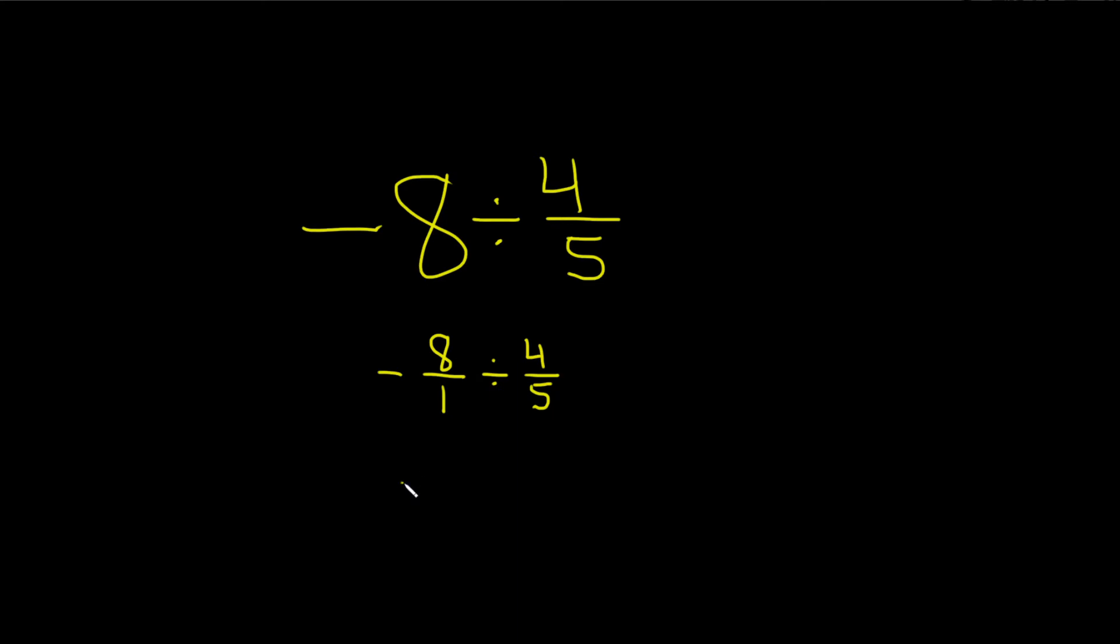So this is really negative 8 over 1 times, and then you just flip these numbers, so 5 over 4. That's called the reciprocal of 4 over 5.